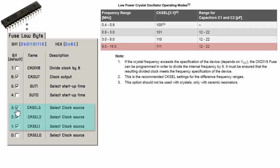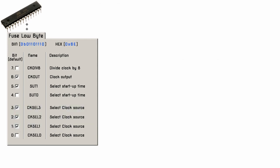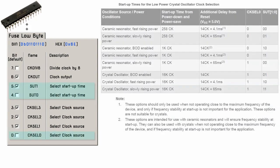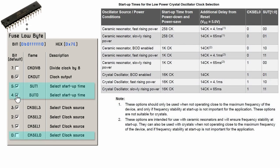We want a low power crystal oscillator operating from 8 to 16 MHz, so bits 3 to 1 should be set to 1. Bits 5 and 4 control the startup time. The default setting of 1 and 0 gives a startup delay of 6 clock cycles from power down and power save, plus 14 clock cycles plus 65 milliseconds from reset. For a low power crystal oscillator, we want the maximum delay of 16,000 clock cycles, so startup time bit 1 and startup time bit 0 should both be set to 1. Clock source bit 0 should also be set to 1.